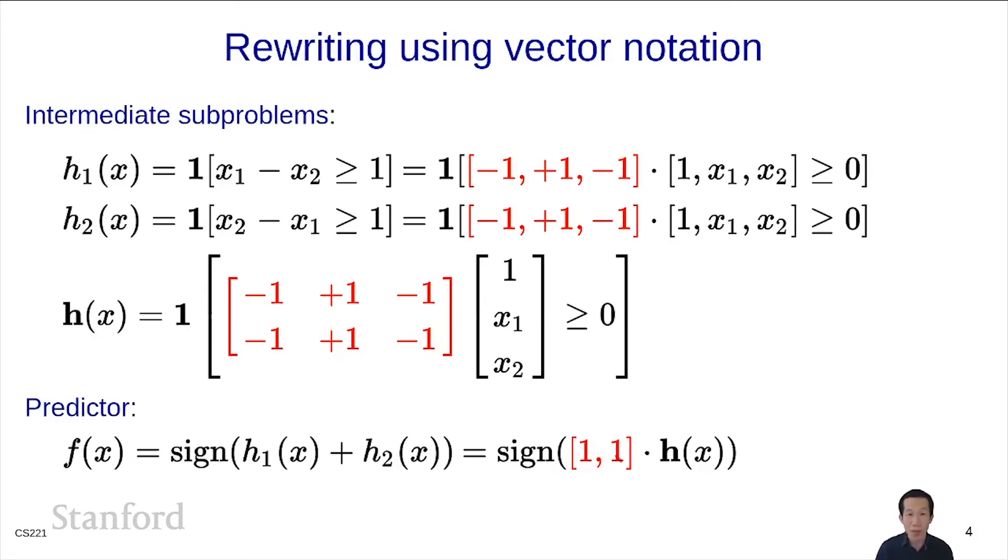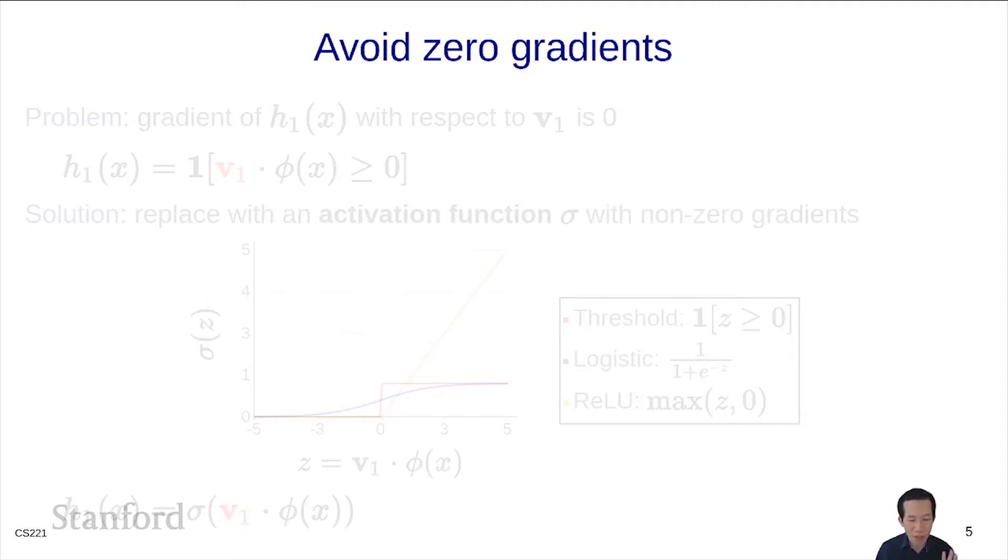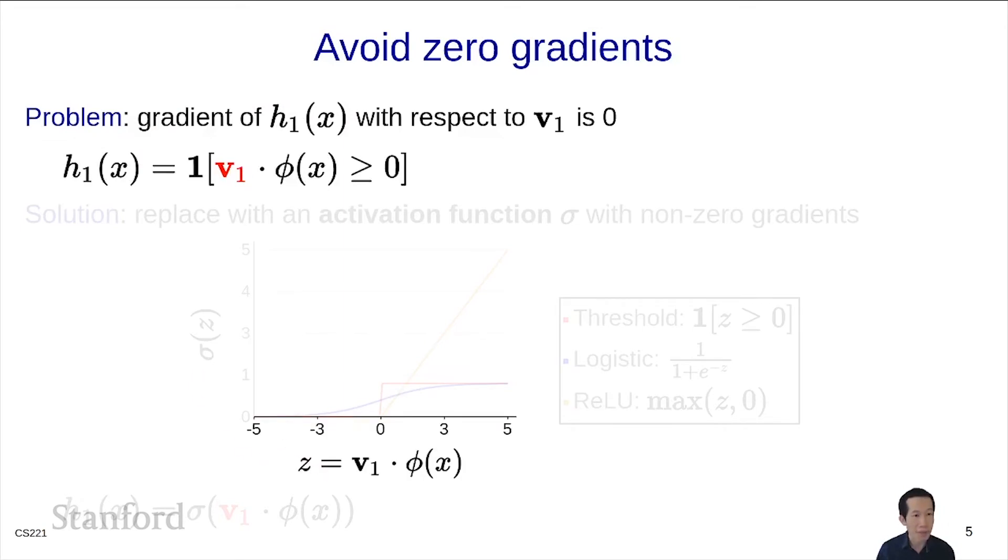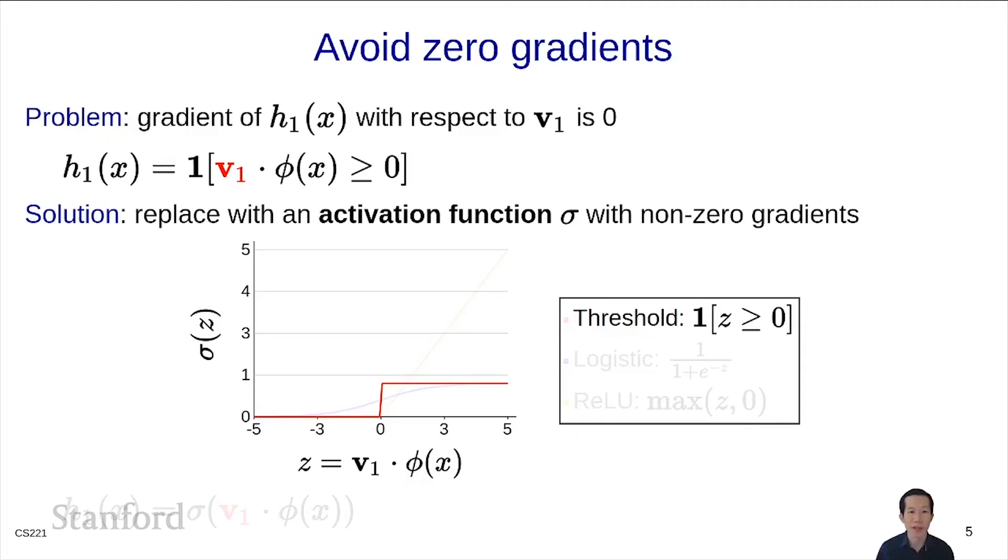Before we learn these weights from data, there's a problem we need to address. The gradient of h₁(x) with respect to v₁ is problematic. The threshold function is a step function: 1 when z ≥ 0, and 0 otherwise. If you try to do gradient descent on this, you'll get stuck because the gradients are 0 basically everywhere.